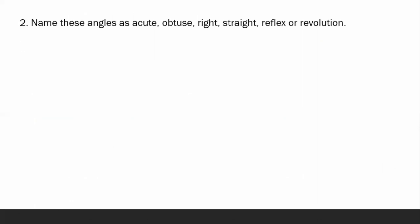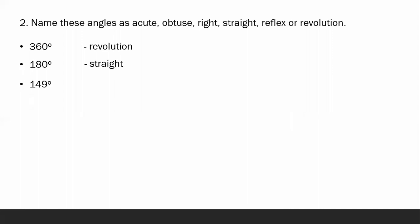Next, name these angles as acute, obtuse, right, straight, reflex, or revolution. We have the first given degree: 360 — that is revolution. Next, 180 — straight. Next, 149 degrees — obtuse angle. Next, 36 degrees — acute angle. Next, 312 degrees — reflex. And last, 90 degrees — right angle.